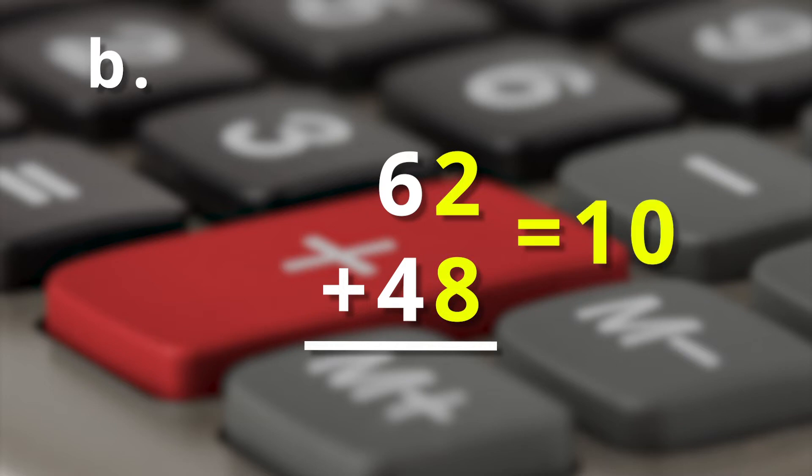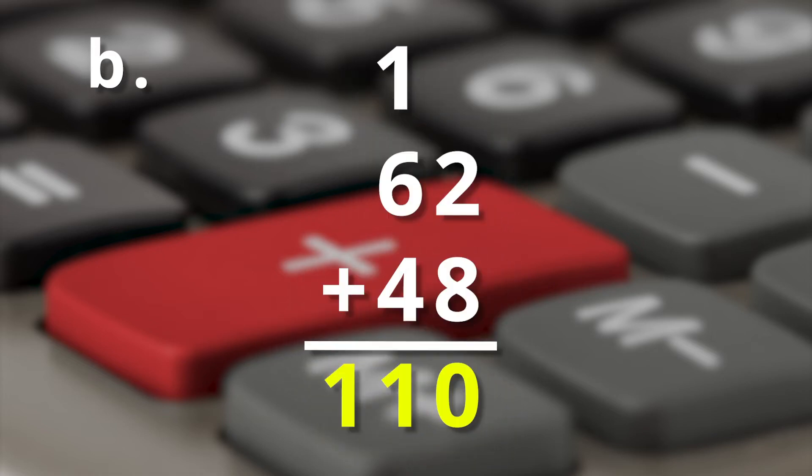Okay, here we go. We've got sixty-two plus forty-eight. So we've got the two and the eight equal ten. So a zero goes in the ones column. A one goes up in the tens column near the six. So we have one plus six plus four is eleven. So sixty-two plus forty-eight is a hundred and ten. Now you're getting it.